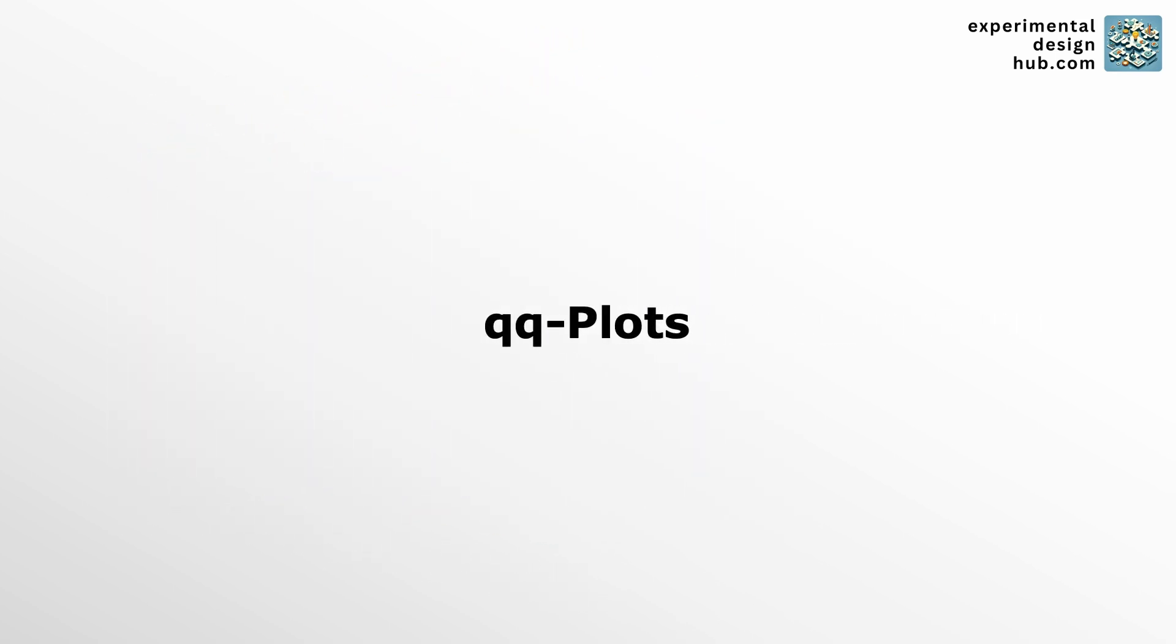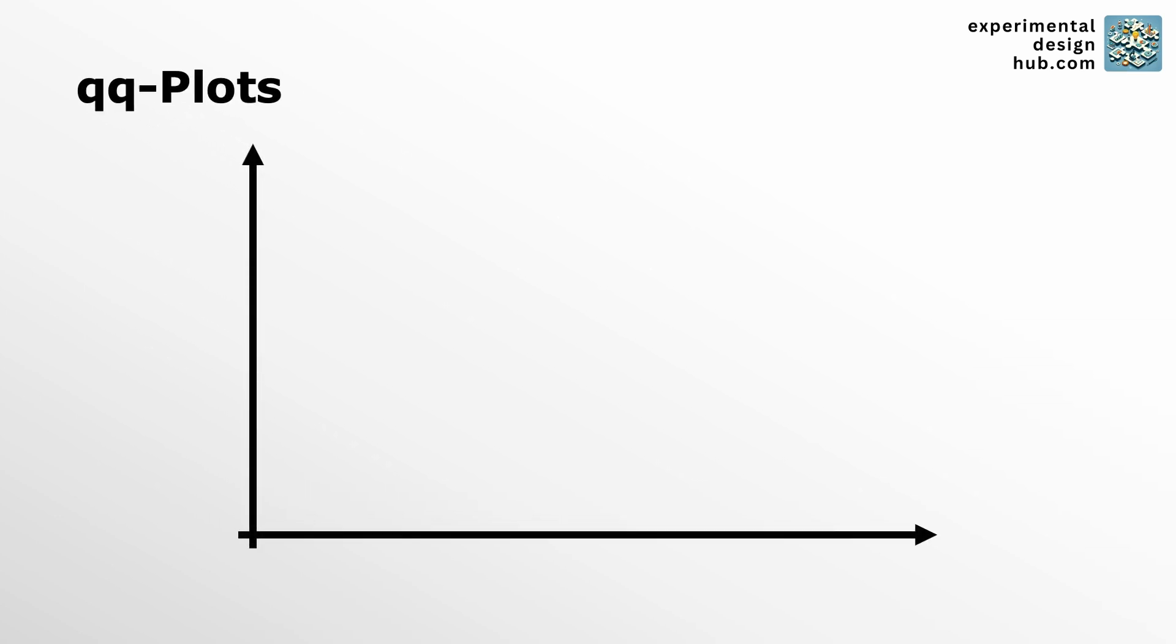It's a super handy visual tool to see if your data fits a theoretical distribution like the normal distribution. You plot the quantiles of your data against the quantiles of its theoretical distribution and if everything is behaving as it should those points are going to fall in line. Literally they'll form a straight line on the plot.